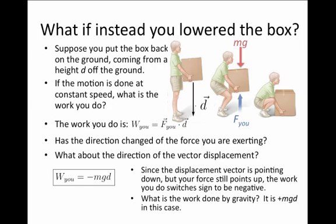In this case, the work done by gravity is positive, because gravity is trying to accelerate the box in the downward direction, or in the direction of the displacement vector. So it's trying to speed the box up.